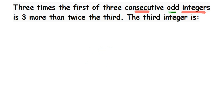Here they're talking about consecutive odd integers. If my first odd integer is five, the next number is six but six is even, so we skip it. Then seven is odd, then eight is even, so the next odd number is nine. So five, seven, nine are the three consecutive odd integers.